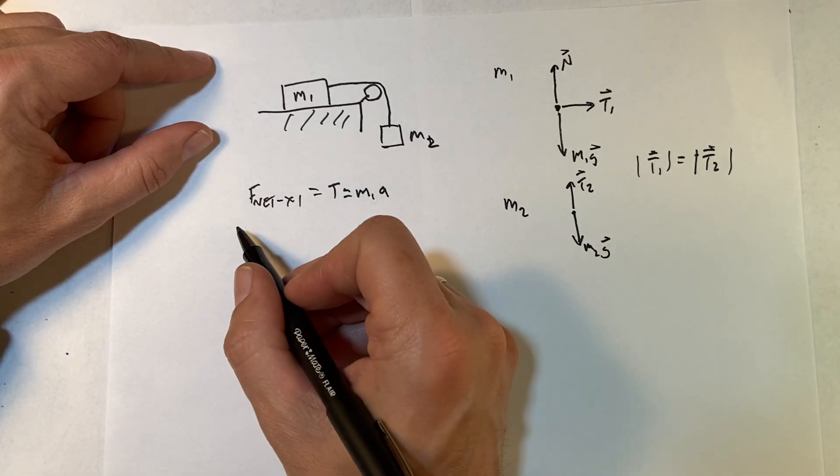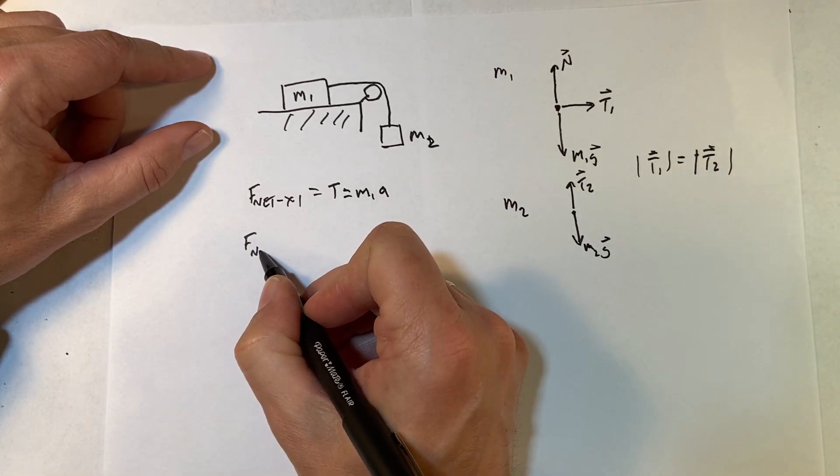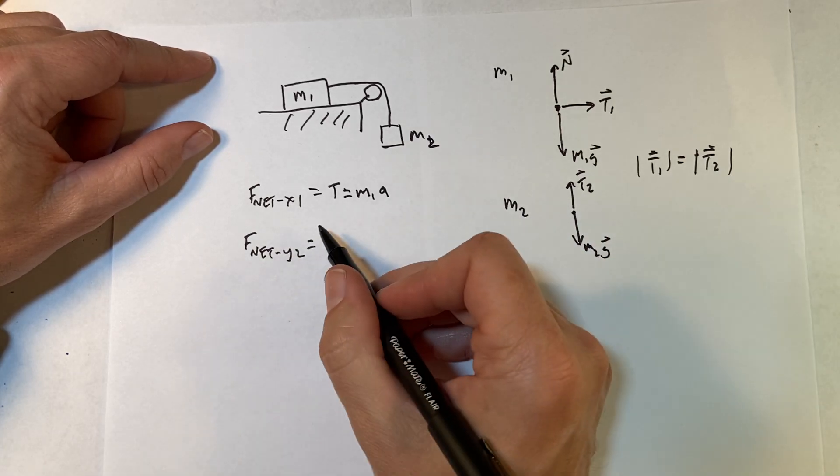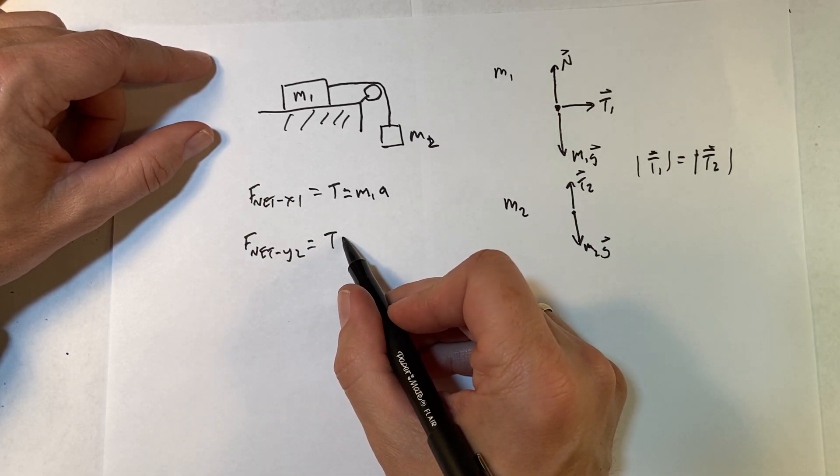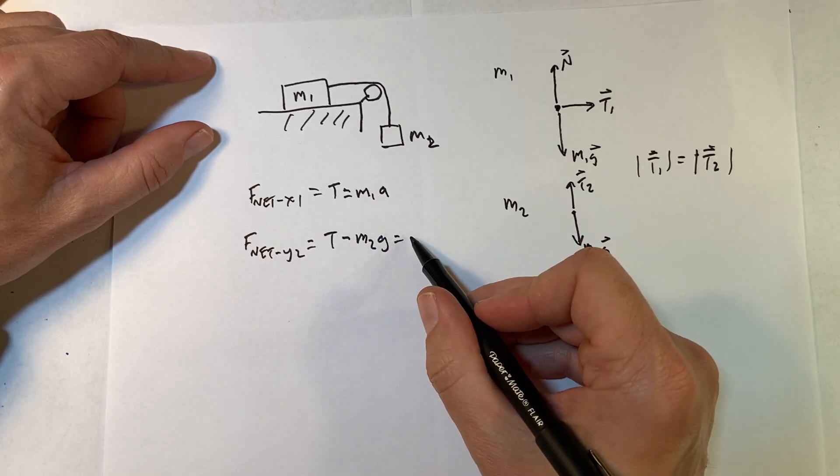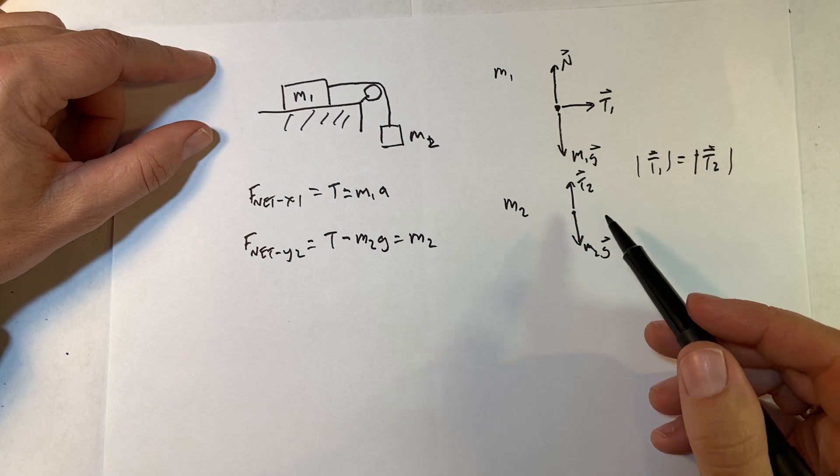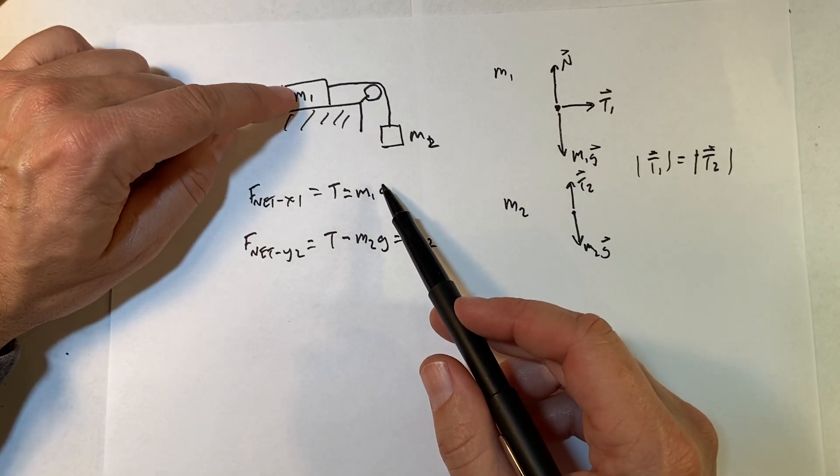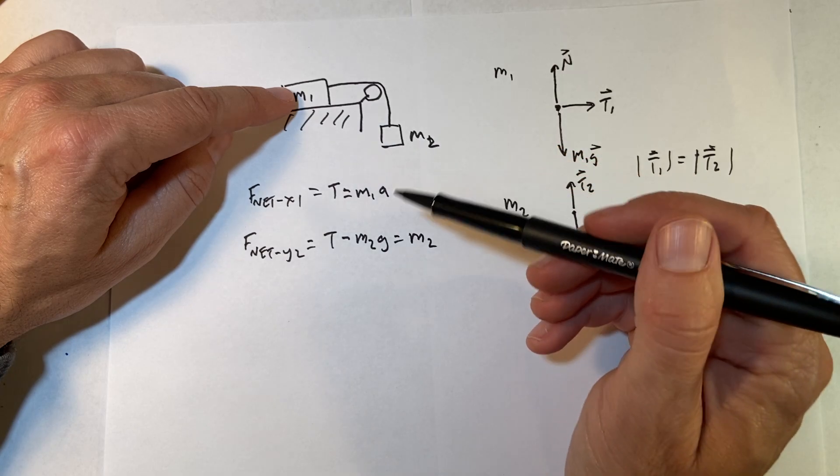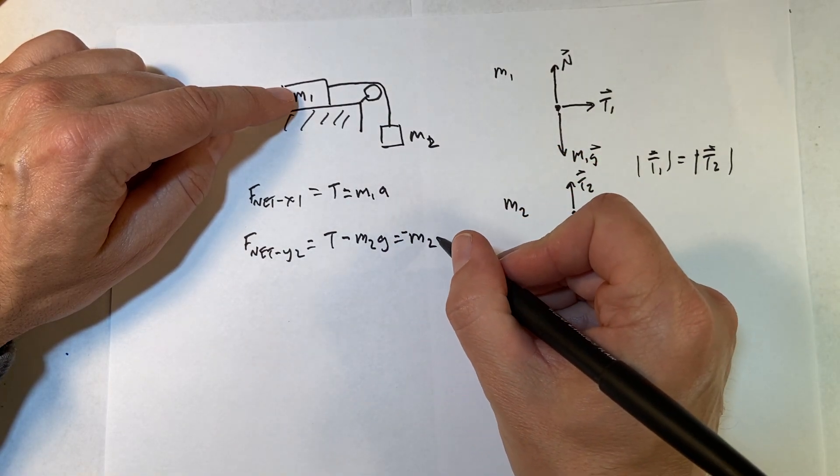Now, for the other one, we're going to do the y direction, because there's no x forces, f net y2. So here I have t minus m2g equals m2. Now, is this going to be the same acceleration? Because they're tied together by string, but this is going to be accelerating down. So this is going to be negative m2a.